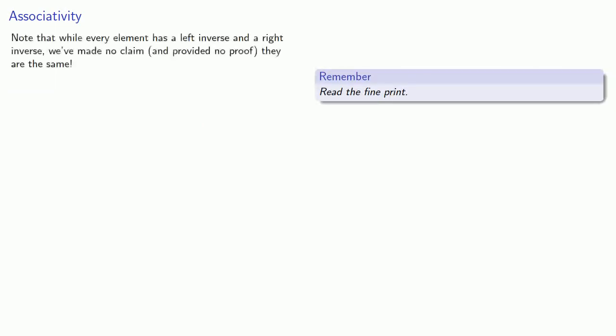But here's an important thing to keep in mind. Read the fine print. While every element has a left-inverse and a right-inverse, we've made no claim and, importantly, provided no proof that they are the same. But let's think about that. A monoid is a semi-group, and a semi-group has another important property, associativity. So what if we incorporate associativity?